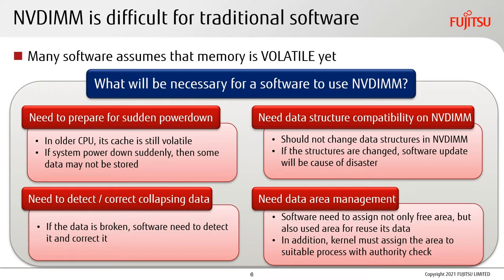However, NVDIMM is difficult for traditional software. Many software applications assume that memory is volatile. So what is necessary for software to use NVDIMM? First, it needs to prepare for sudden power-down. In older CPUs, the cache is still volatile, so if the system powers down suddenly, some data may be lost.